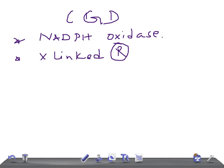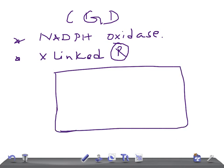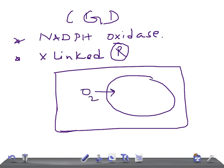Let me draw over here and explain what NADPH oxidase does. This is a phagosome membrane. O2 enters into the cell, becomes a superoxide radical, then converts to an oxygen radical and hydrogen peroxide.